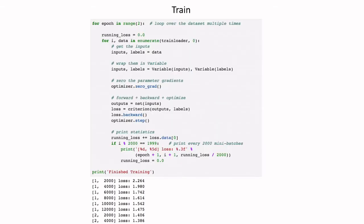A few lines of code perform the training: data is taken in batches, the loss is calculated, and weights are updated accordingly, continuing iteratively.